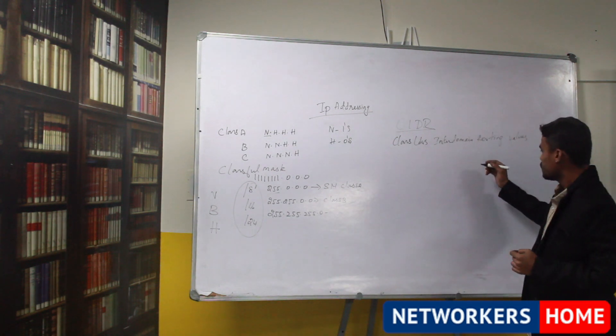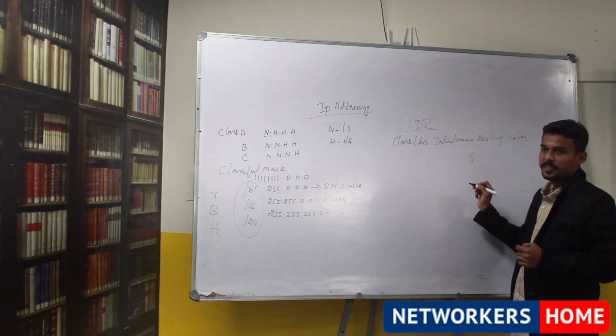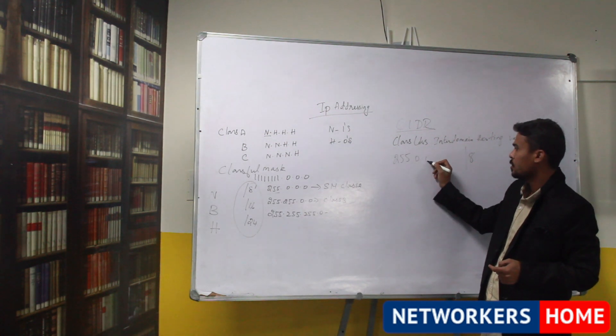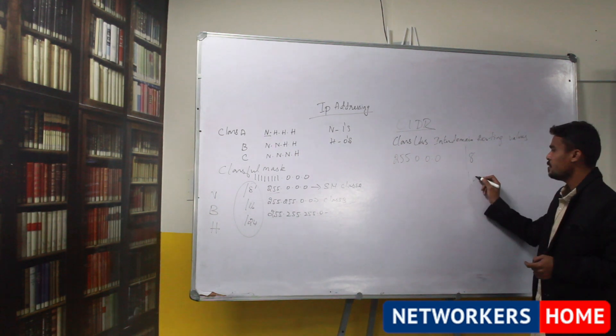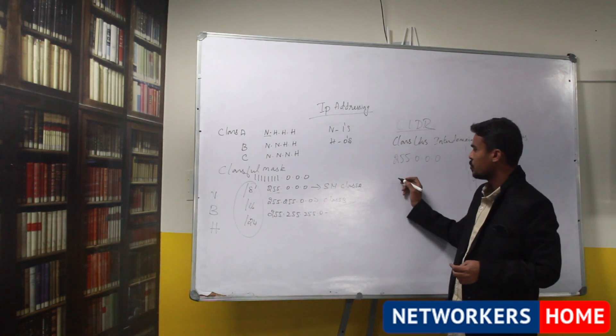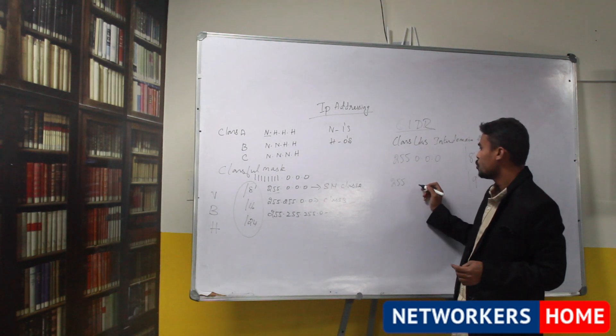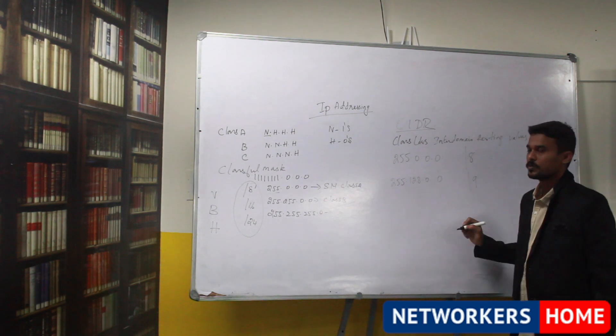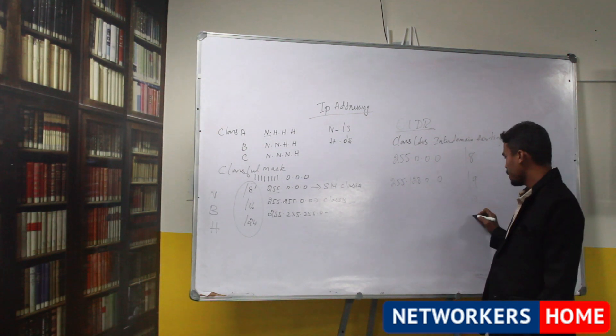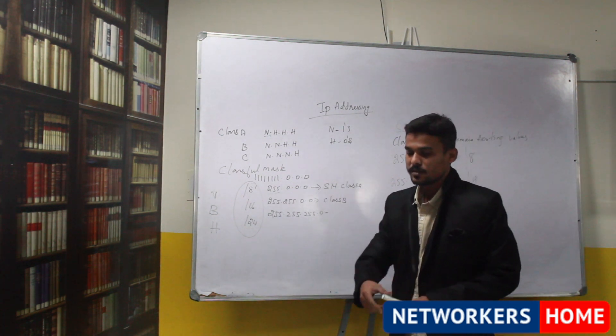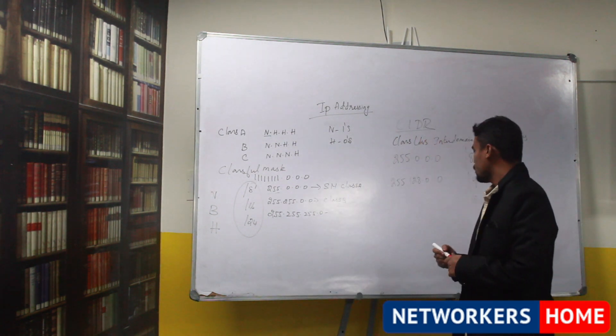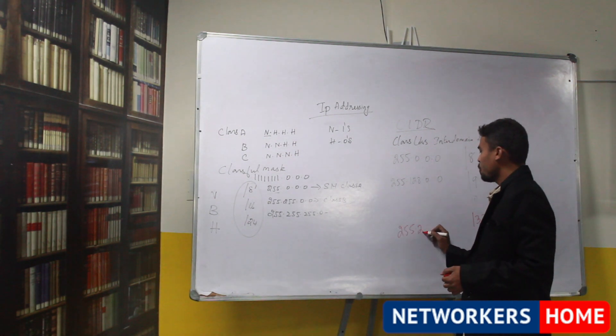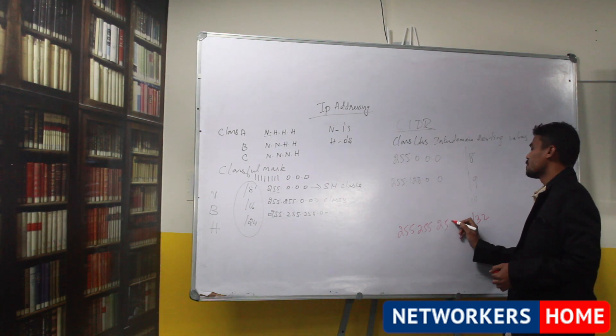So this CIDR values how you define it? For example if I am saying slash 8, so 8 network bits are on right, so 255.0.0.0. For example slash 9 means 8 plus 1, 9 network bits are on, the value will be 255.128.0.0. Similarly for slash 10, slash 11, we can write up to 32. These values are called as CIDR values. Based on this value only we can do subnetting.